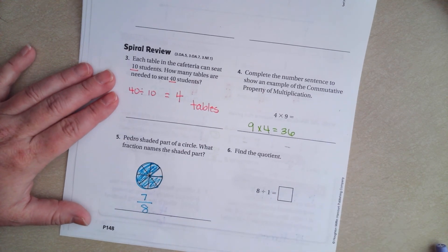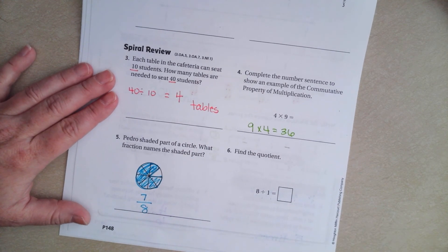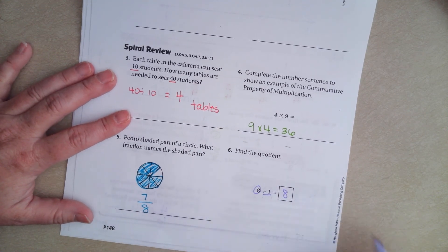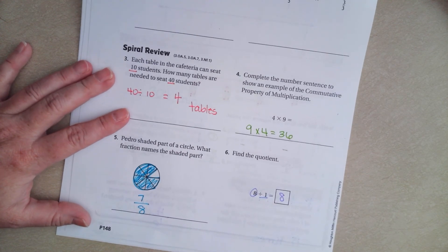We have 8 divided by 1. Anytime that you have a number divided by 1, it is the other number. That's it.